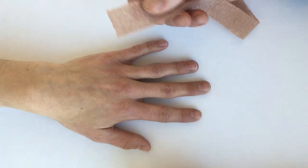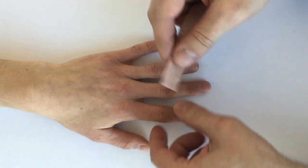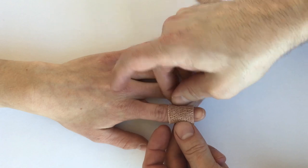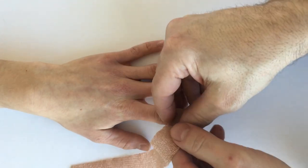When using Coban or some other self-adhesive elastic bandage, you're going to start at the distal end of the finger and leave the tip of the finger exposed so that you can monitor for color and circulation.